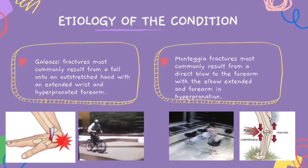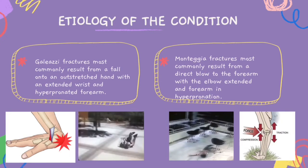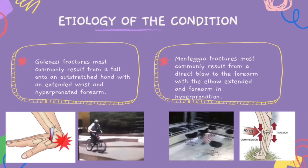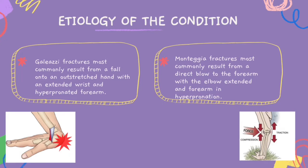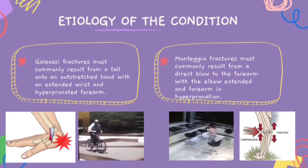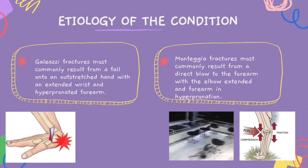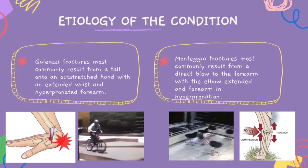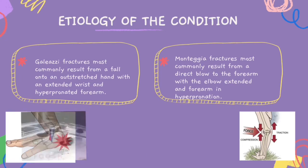Galeazzi fractures most commonly result from a fall onto an outstretched hand with an extended wrist and hyperpronated forearm. The energy from the radius fracture gets transmitted towards the radio-ulnar joint, leading to dislocation of the DRUJ. Monteggia fractures most commonly result from a direct blow to the forearm with the elbow extended and forearm in hyperpronation. The energy from the ulnar fracture gets transmitted along the interosseous membrane, leading to rupture of the proximal quadrate and annular ligaments, disrupting the radiocapitellar joint.